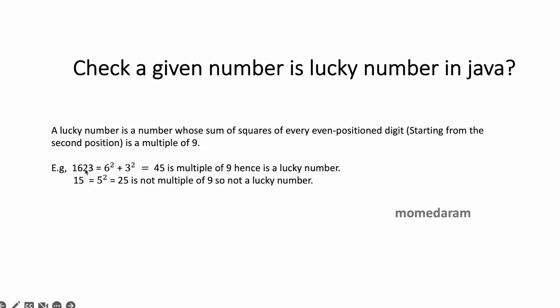Example: 1, 6, 2, 3. In this, 6 is the even position and 3 is also the even position. So, 6 squared plus 3 squared equals 36 plus 9, which equals 45. Since 45 is a multiple of 9, we can say this number is a lucky number.